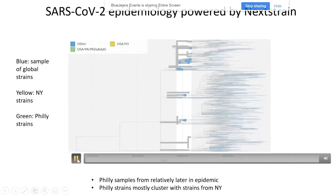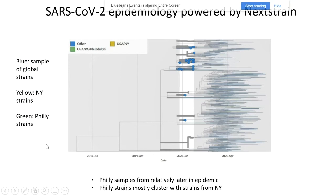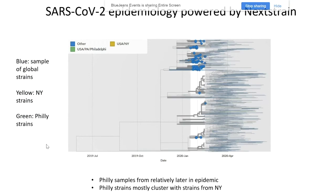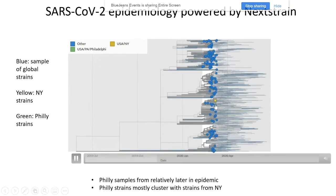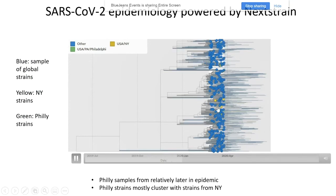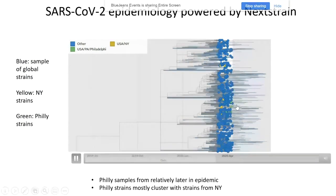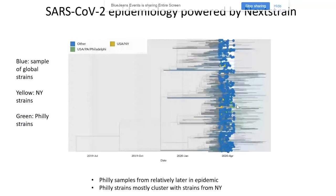The output of our informatics pipeline is compatible with the NextStrain platform. Here you see an animation showing the accumulation of genomes from researchers around the world. Some yellow dots represent genomes identified in New York State, and some green dots represent the genomes we sequenced here in Philadelphia. You'll notice that the yellow dots are near the green dots, which implies that the epidemic in Philadelphia was potentially seeded from strains originating in New York State.